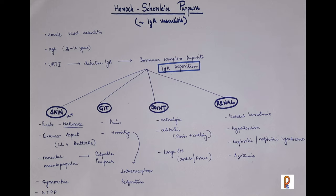Another common manifestation is mesenteric vasculitis, affecting the GIT. The most common manifestation in the GIT is abdominal pain, which may be so severe that it mimics surgical abdomen. It may also be associated with nausea and vomiting. Complications like intussusception or perforation may also occur.